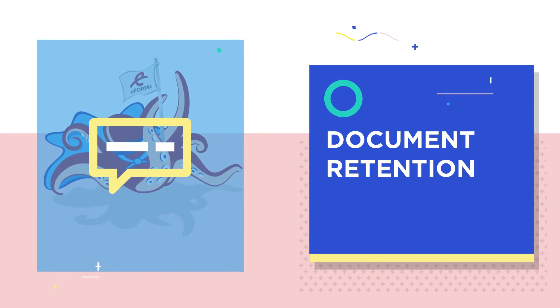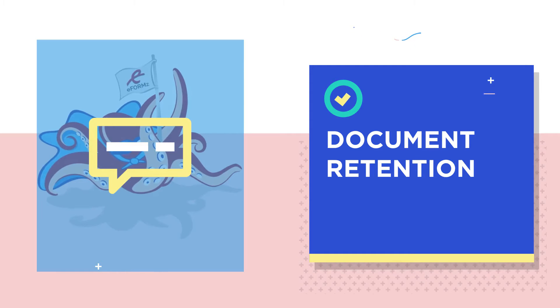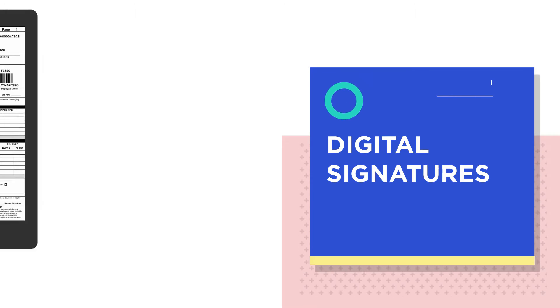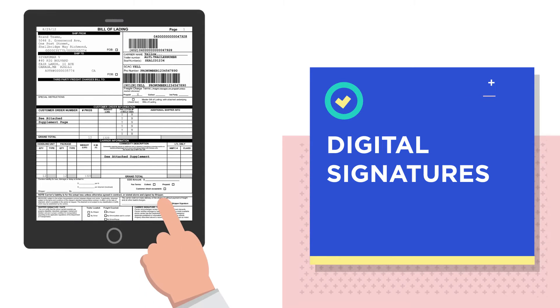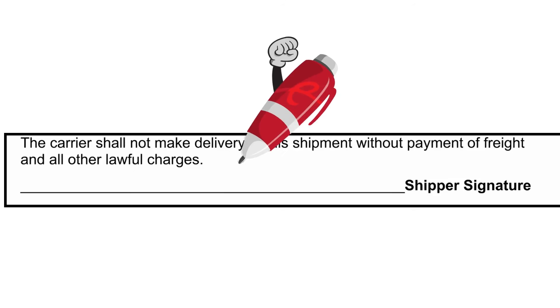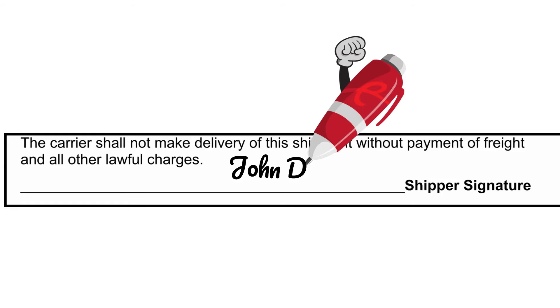Use eForms to automatically archive critical documents in PDF format for reprinting or emailing. Create documents in eForms that support digital signatures, freeform text, and check boxes with electronic signature pads, Apple iPad, Windows, or Android tablets.